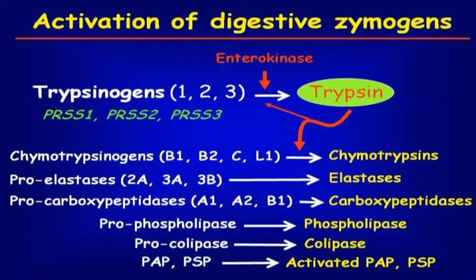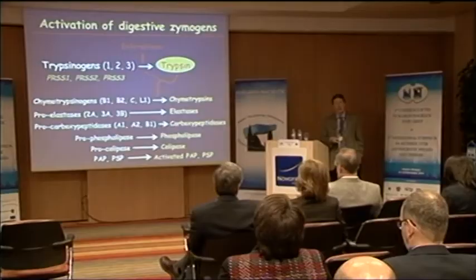The surprising finding in genetics was that mutations — even though as Mark Lowe said it's an inflammatory disease — nobody found mutations in inflammatory genes. All the mutations were identified in some of these proteins, which are all acinar cell proteins with many having proteolytic activity. So that justifies discussing trypsin.